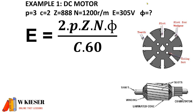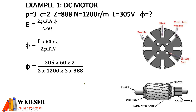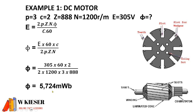Because we are given the EMF of 305 volts, we will use the EMF equation and manipulate it to get the flux per pole on its own. So therefore it will be EMF multiplied by 60 and the number of parallel paths, divided by 2, the pole pairs, the armature conductors, and the speed in revolutions per minute. Once we substitute all those values in, we find that we end up with a flux per pole of 5,724 milliweber.